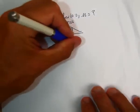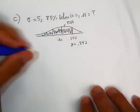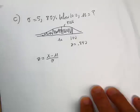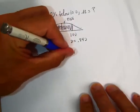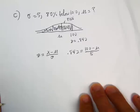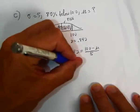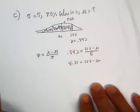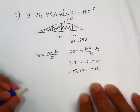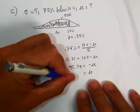So z equals 0.842. We're going to use our z-score formula of x minus mu over sigma. So 0.842 equals x, which is 100, minus mu over 5. We multiply 5 times 0.842 and we get 4.21 equals 100 minus mu. We subtract 100 from both sides: 4.21 minus 100 gives us negative 95.79 equals negative mu. Divide both sides by negative 1, we get mu equals 95.79.